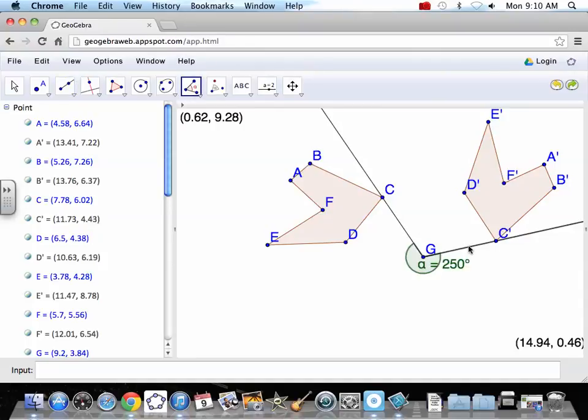It says we measured the angle backwards. That's okay. We're going to just measure it the other way. Depends on the order that you click things. Clockwise aspect. So 110 degree rotation. That's what we were trying to do.